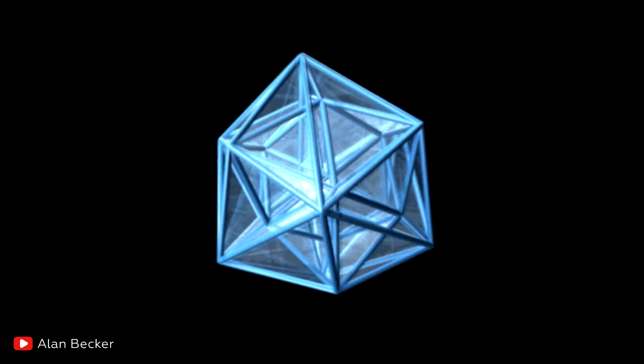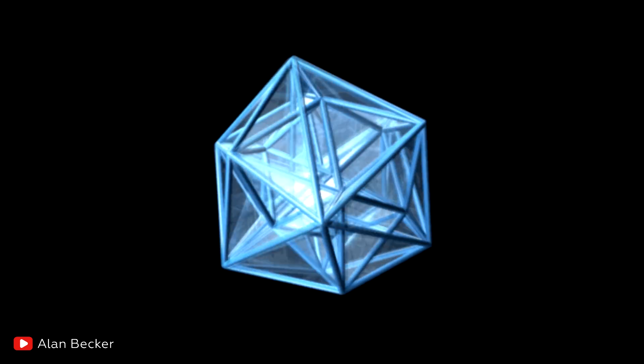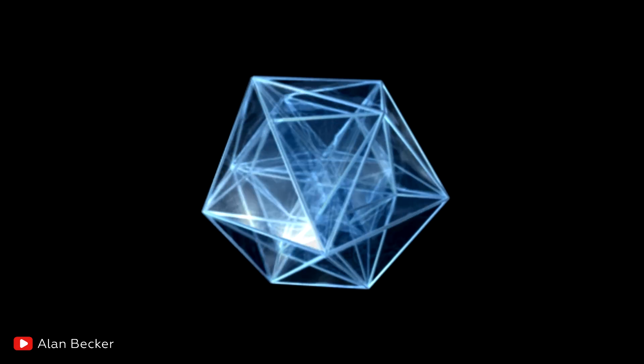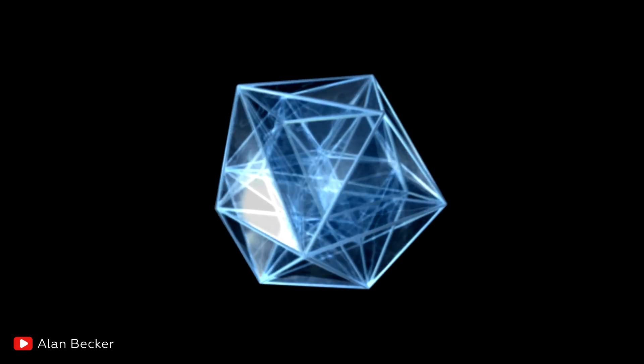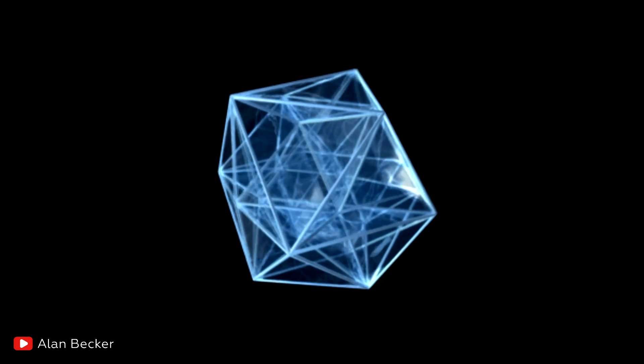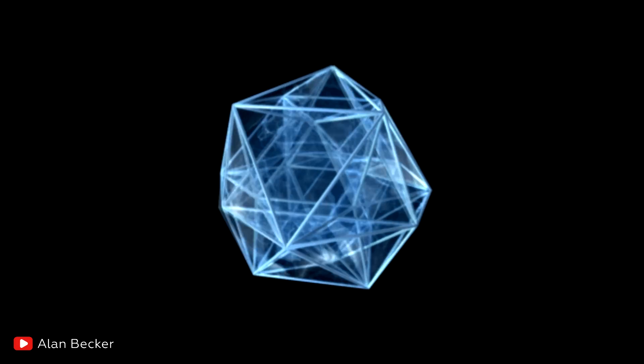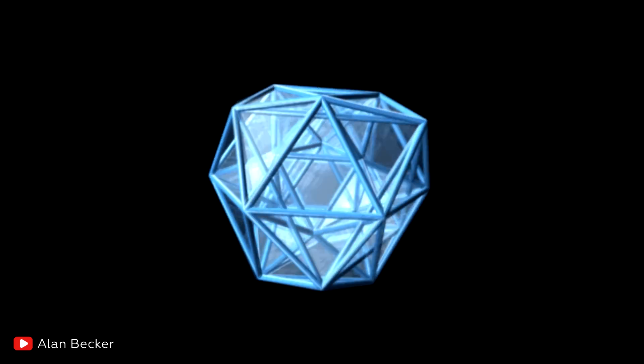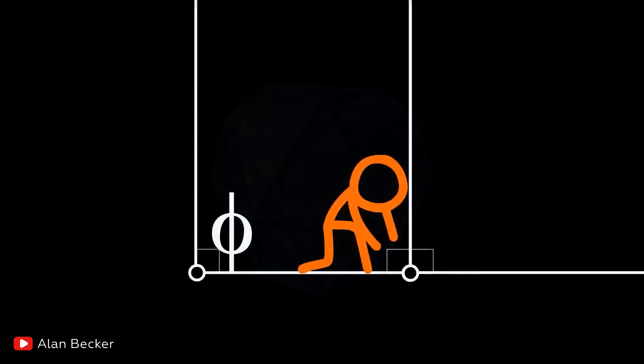And here everything falls into place, since these parameters and triangular two-dimensional faces hint at a 24-cell polytope, which I will further call Octaplex. Octaplex, great name for a villain. This is one of the six regular four-dimensional polytopes. Moreover, it has no analogs in three-dimensional space, which fits perfectly for this story.